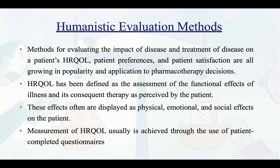The humanistic evaluation method evaluates the impact of disease and its treatment on a patient's health-related quality of life (HRQoL), patient preferences, and patient satisfaction — all growing in popularity for pharmacotherapy decisions. HRQoL has been defined as a measurement of the functional effects of illness and its treatment as perceived by the patient, often displayed as physical, emotional, and social effects. Measurement of HRQoL is usually achieved through patient-completed questionnaires.